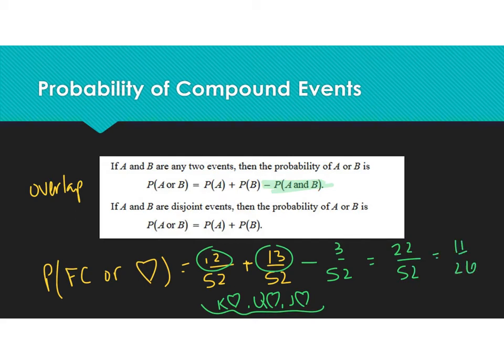So you don't want to count certain cards twice. If they are disjoint — meaning there's no overlap — then you just strictly add them. There is nothing to subtract. So if it's an 'or' — like I want the probability of this or this — you're always going to add. And then if there's overlap, you have to remember to subtract it. It's as easy as that.